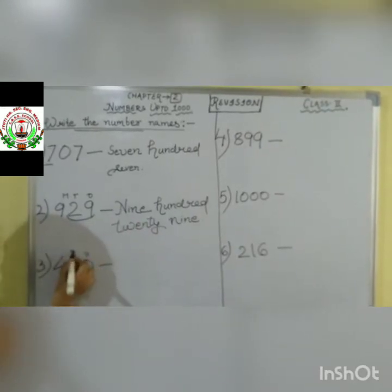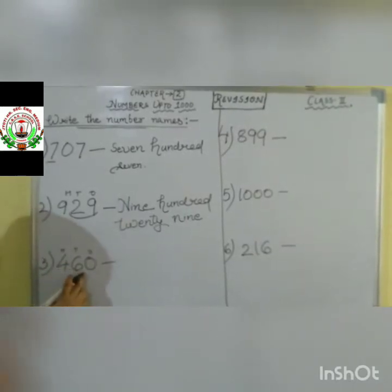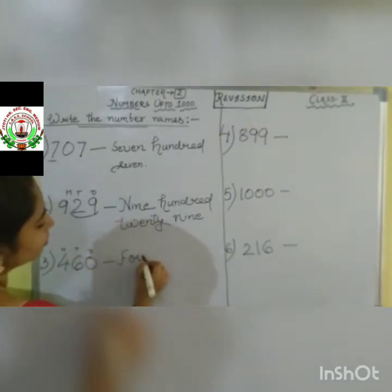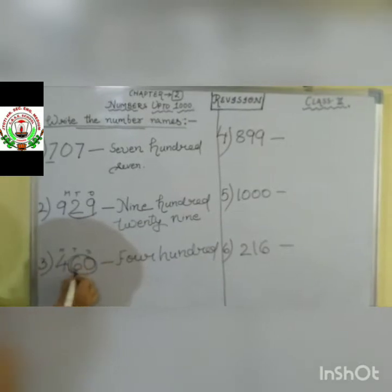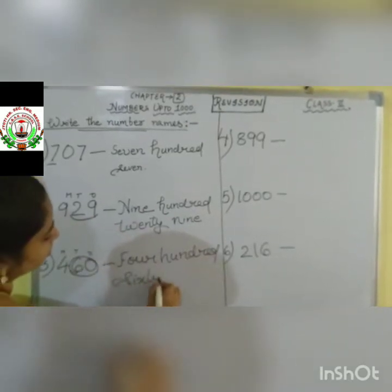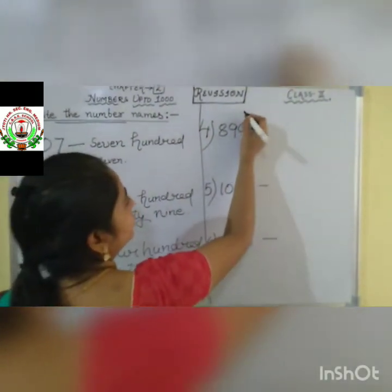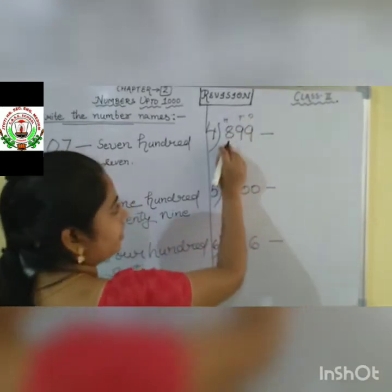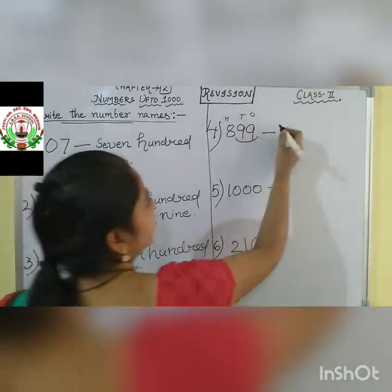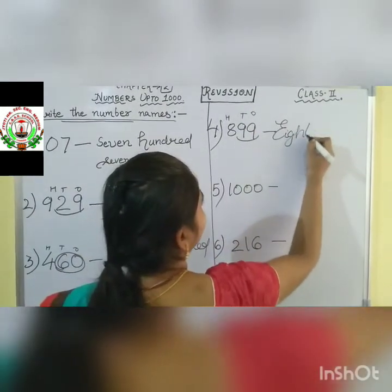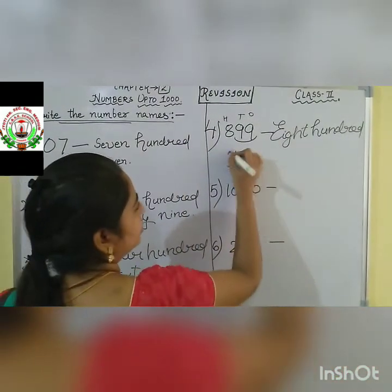Next question: 460. We are saying it as four hundred and sixty. The same way you have to write down: four, then hundred, and the 10's and 1's place together: sixty. So we write four hundred and sixty. Next: 899. This all together, both numbers combined: 99. Let us write eight hundred and ninety-nine.